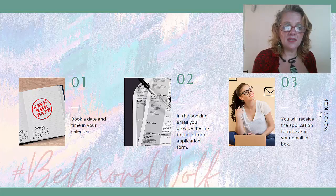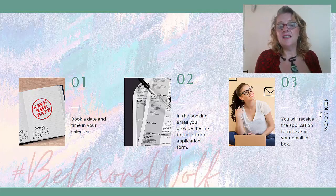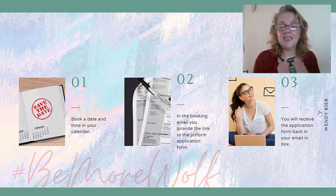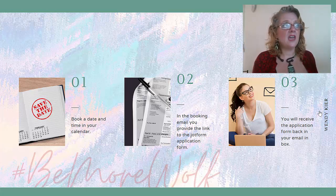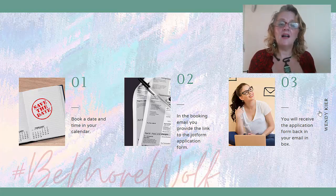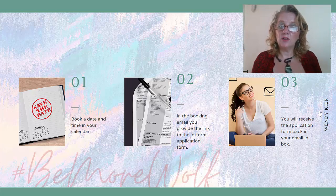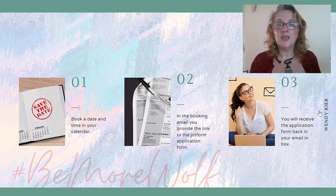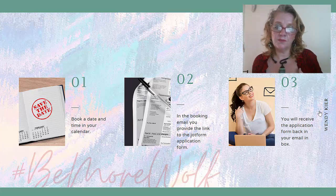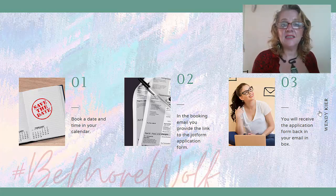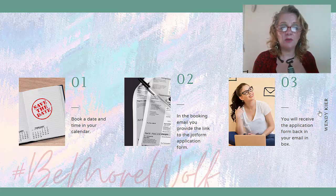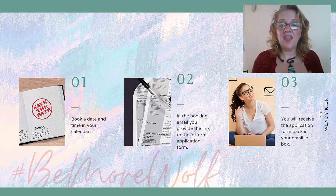So the process itself: I get potential clients and prospects to book into my calendar first — they book a date in my calendar. The next step is that they receive a booking confirmation email with the time and date of the call, and they will also receive a link to the Jotform application form so they can get that form filled in. Once that form is filled in, it will come back to you via your email inbox. It's automated once you set up the link within your online calendar scheduling platform.